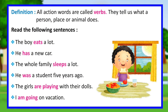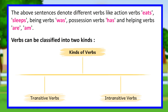Kinds of verbs: definition. All action words are called verbs. They tell us what a person, place, or animal does. Read the following sentences: 'The boy eats a lot.' 'He has a new car.' 'The whole family sleeps a lot.' 'He was a student five years ago.' 'The girls are playing with their dolls.' 'I am going on vacation.'